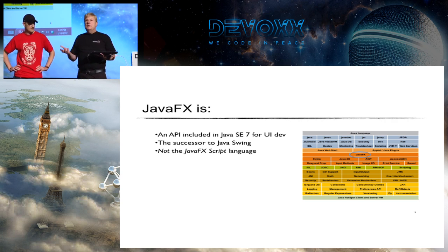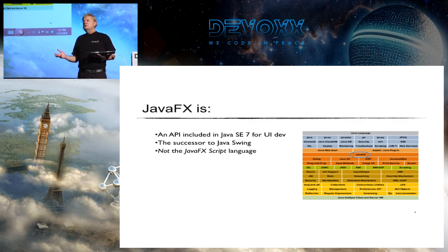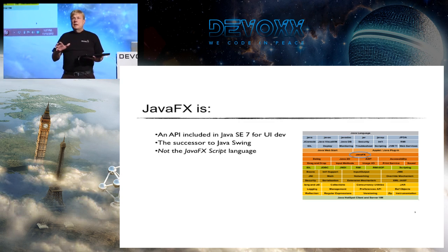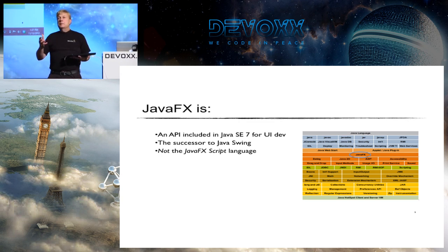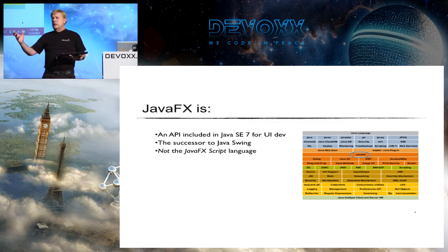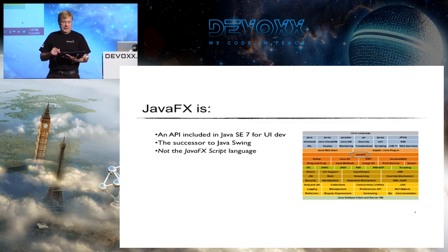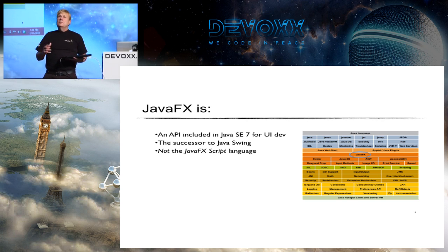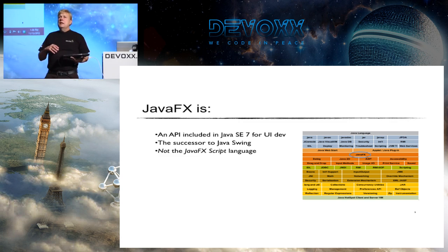So what is JavaFX? It's actually an API that comes with the JDK. If you've got Java 7, you've got JavaFX. It's the successor to Java Swing. One of the most prevalent use cases right now is porting Swing applications — developers are embedding JavaFX components inside Swing applications and migrating them little by little. It's not the JavaScript language. In 2007, JavaFX Script came out as its own language running on the JVM, but there was a lot of developer resistance. Now it's baked into the Java API.